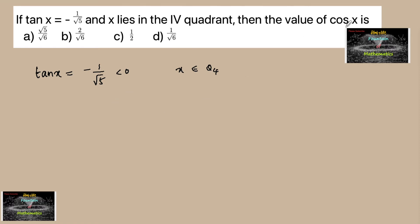In fourth quadrant, cos x is positive. So since tan x is equal to minus 1 by root 5